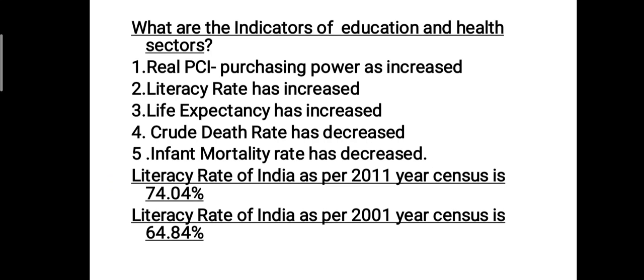Fifth indicator is infant mortality rate has decreased. Infant means a newborn child; infant mortality rate means the number of children dying per thousand live births. Infant mortality rate has decreased because of education among women and proper healthcare among women — if the mother is strong, the child is bound to live. These are the indicators showing that education and health sector is improving in our country.